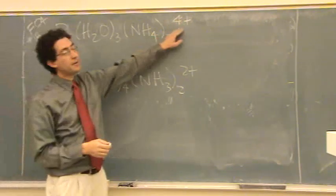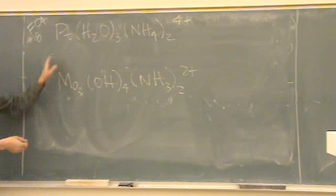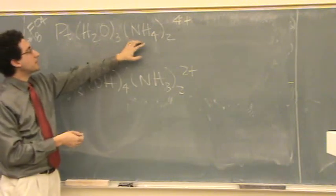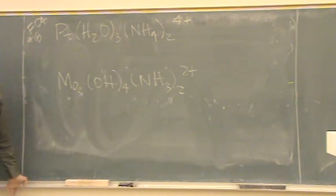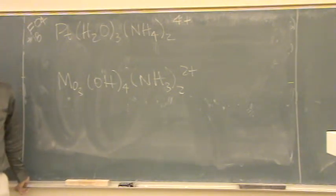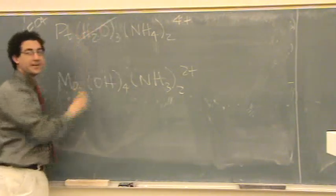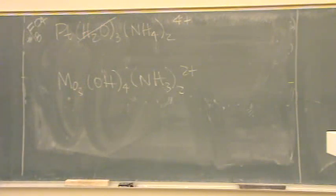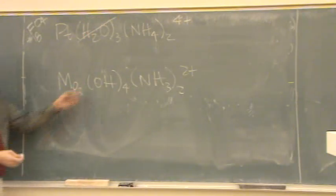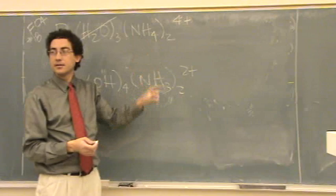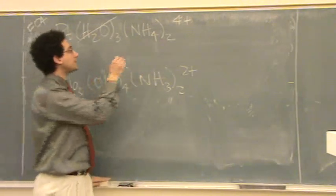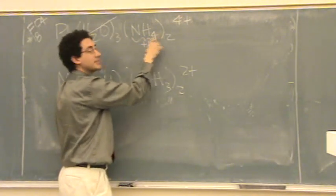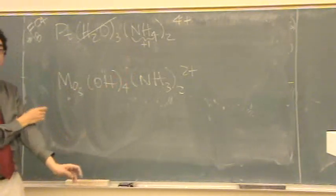The overall charge for the top one is 4+. Platinum, three waters, and two ammoniums. What's the overall charge on water? Zero. Just ignore it. It contributes nothing to the overall charge if it's zero. How about NH4? It's individually plus one, and then since there's two, it'll be plus two.